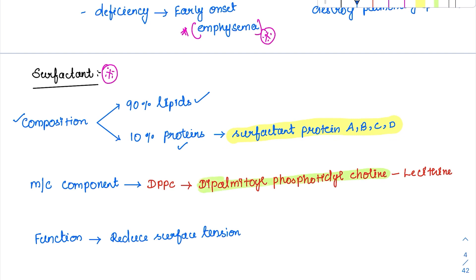DPPC can be asked in various option forms — such as what is the most common surfactant protein secreted by alveolar cells. The answer is DPPC. It can be given in the option as choline, as well as lecithin. Both can appear as options, so go for lecithin or DPPC.